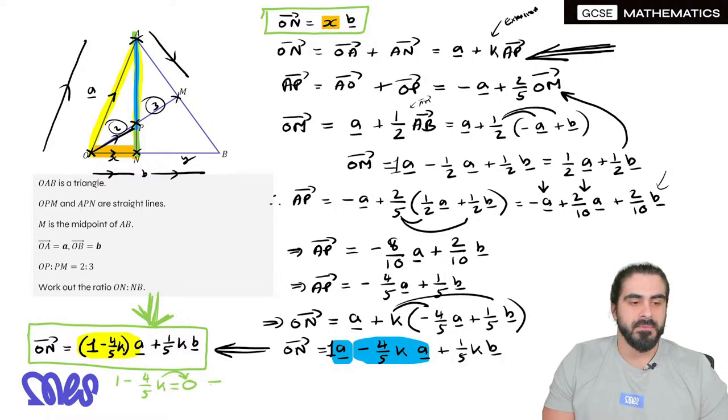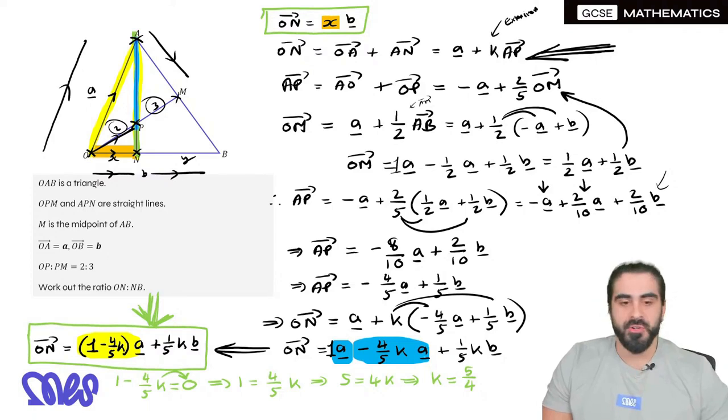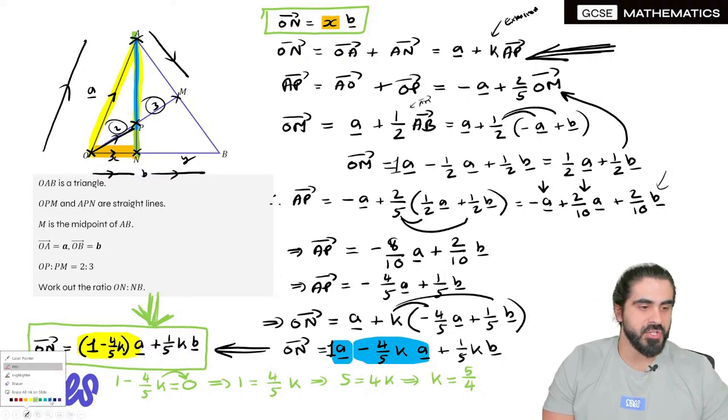So move that over. Then we rearrange. Times both sides by five. Divide both sides by four. So K is five over four. But we're still not done. We need to find the ratio. Do not forget, we still need to find the ratio.